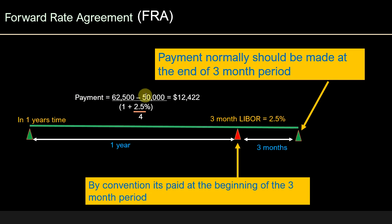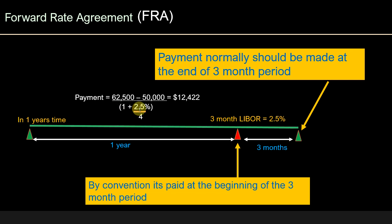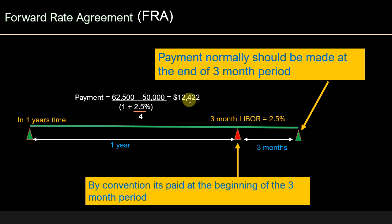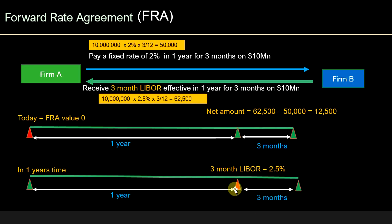The net payment is $62,500 − $50,000 = $12,500. We discount this cash flow by the LIBOR rate for a three-month period with quarterly compounding, dividing by 4: $12,500 ÷ (1 + 2.5%/4) = $12,422. So Firm B will pay Firm A $12,422 at the beginning of the interest period. To calculate the present value today, you simply discount this amount further using the risk-free interest rate.